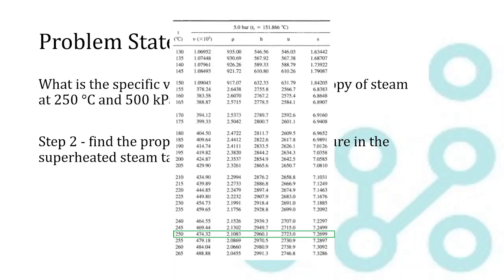So all the values that we need are in this line of the table. We've got our specific volume, our density, specific enthalpy, specific internal energy, and specific entropy.